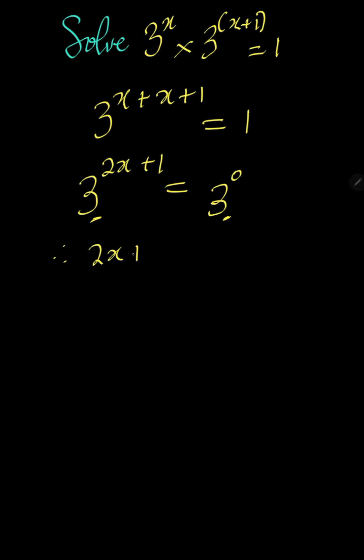Hence, 2x plus 1 is equal to 0. 2x will be equal to 0 take away 1. 2x is equal to negative 1, divide everything by 2.